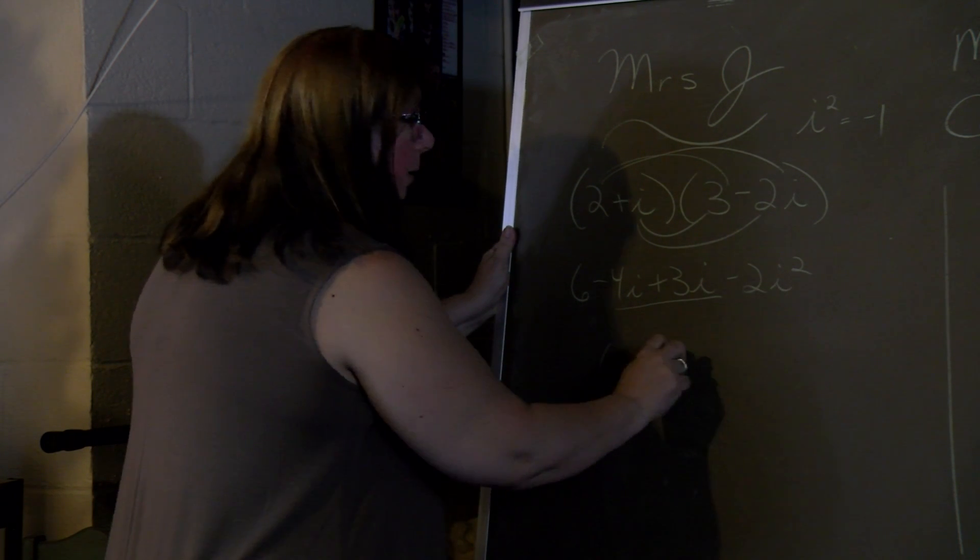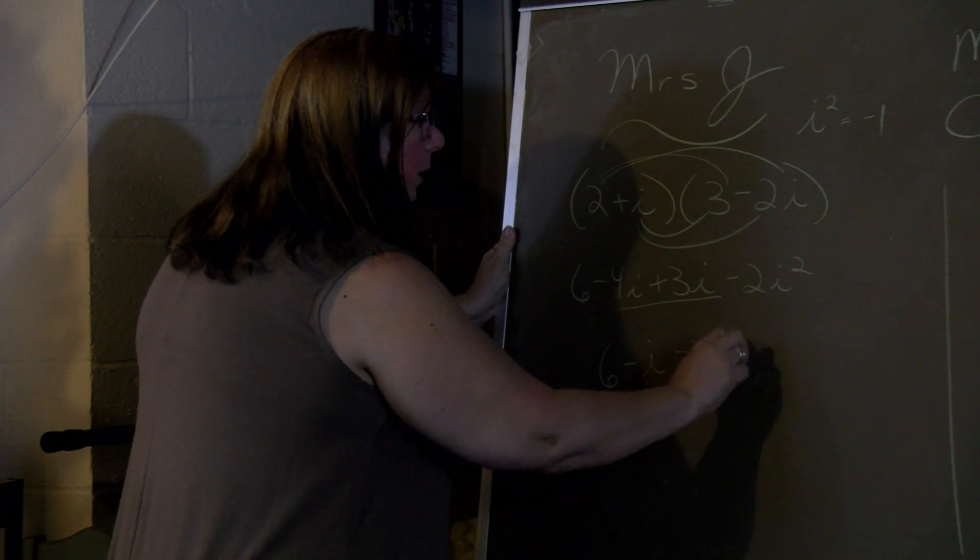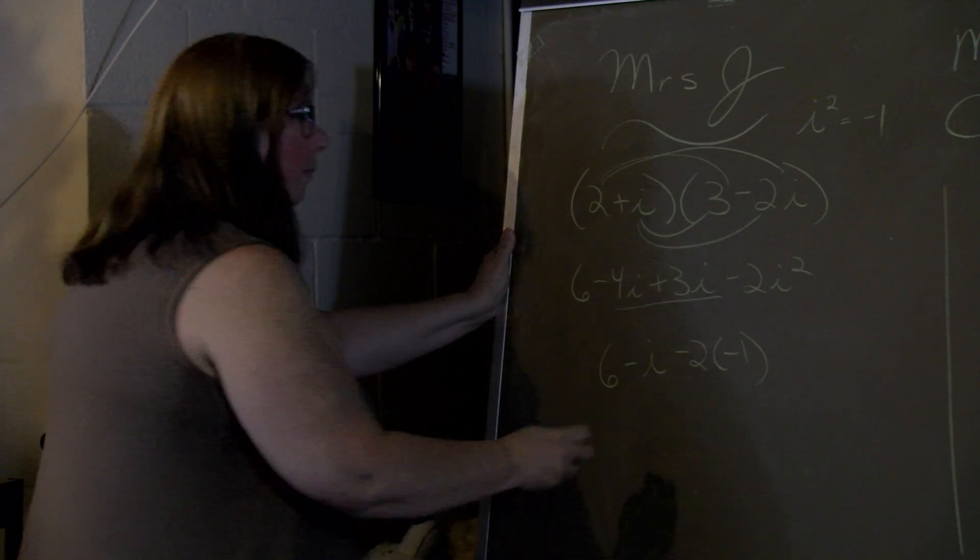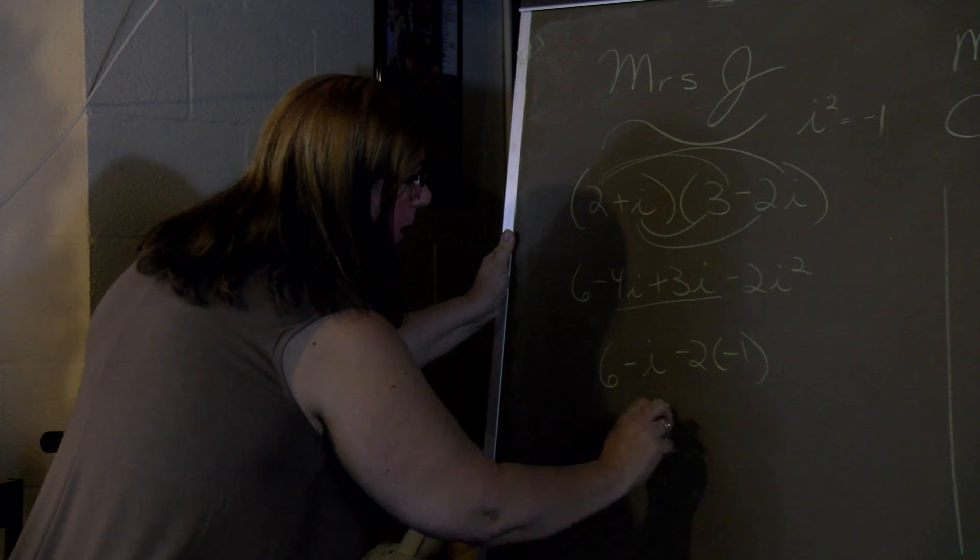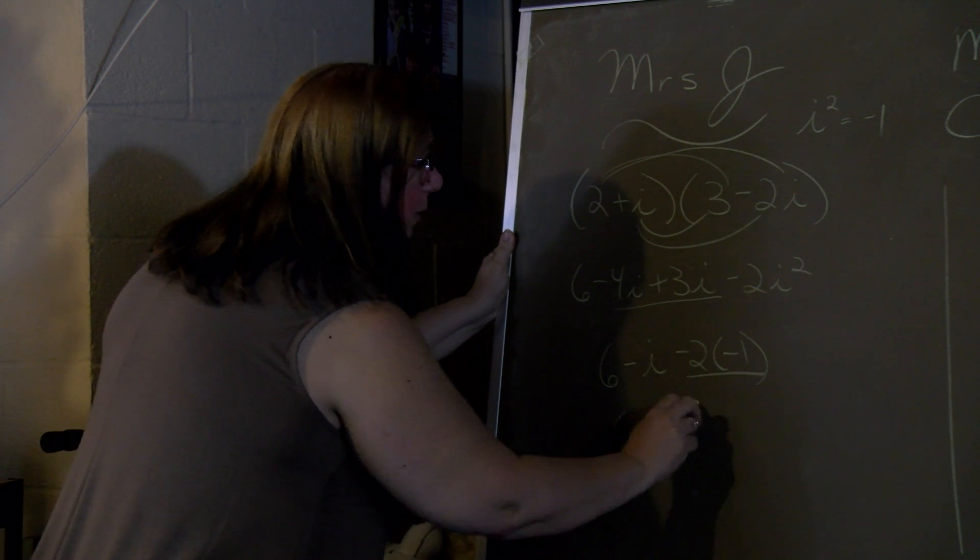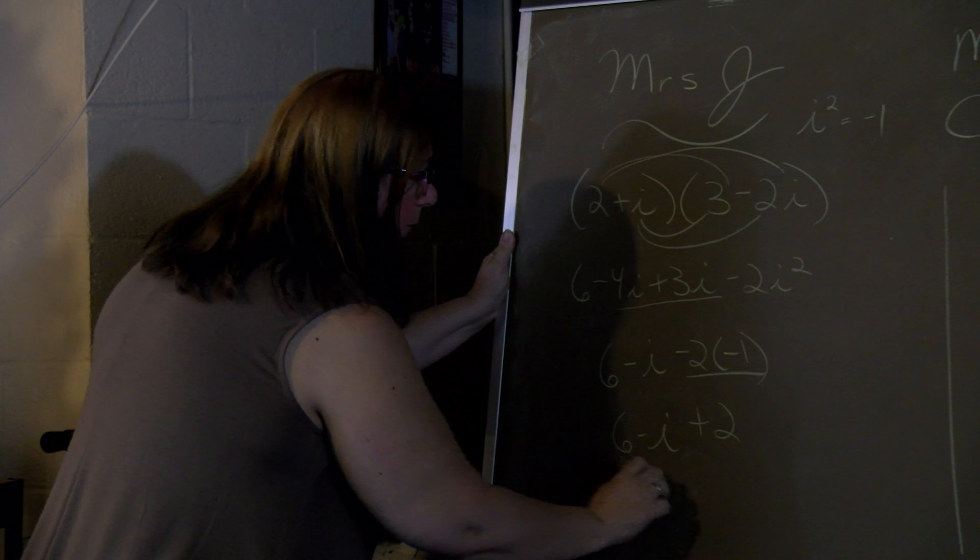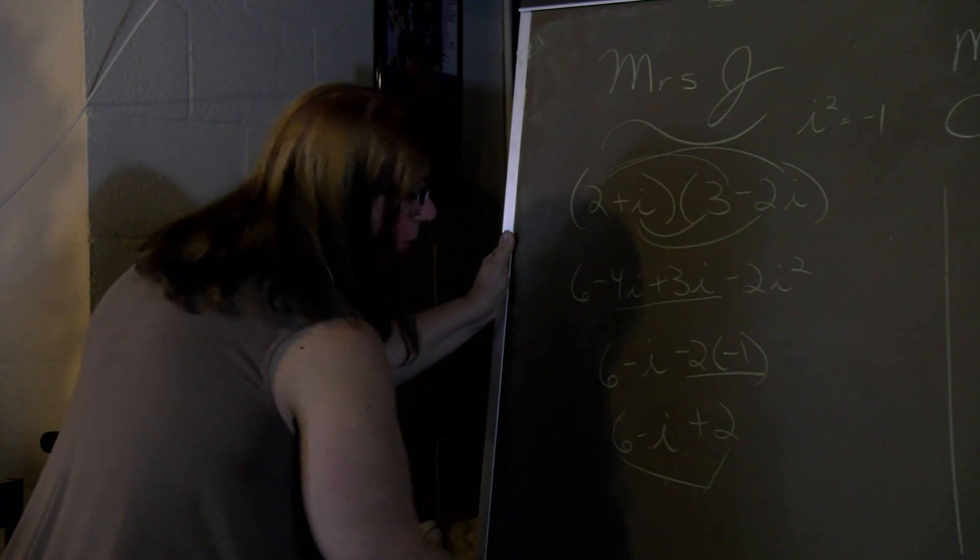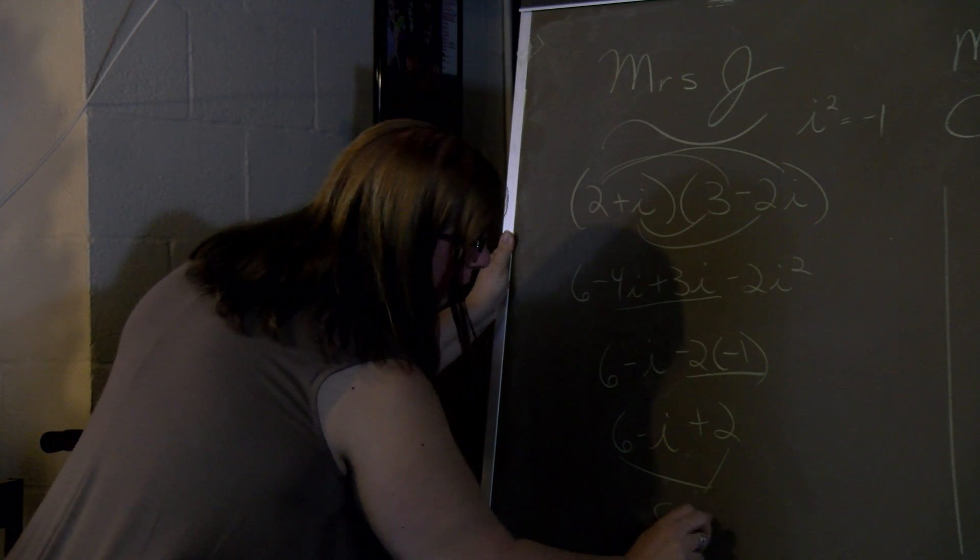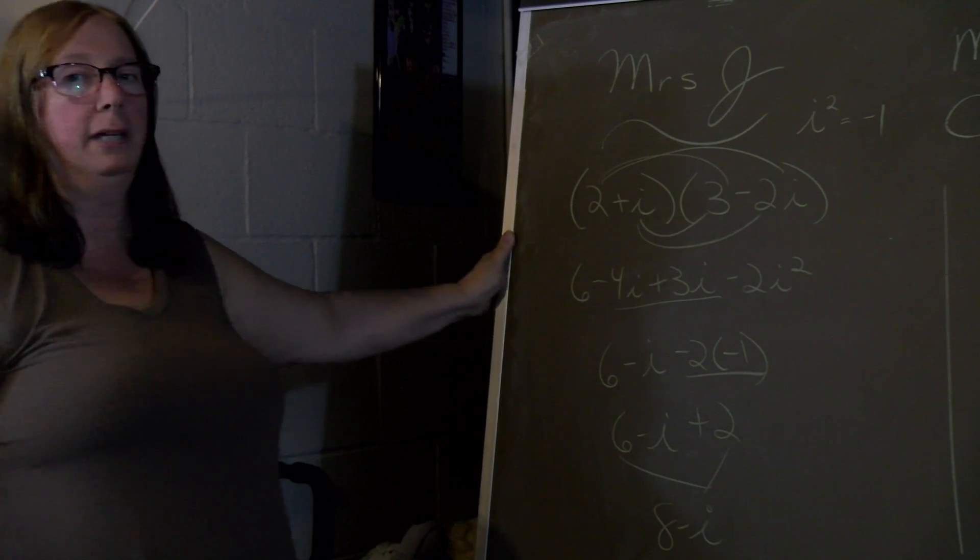But then this, remember i squared is a negative 1. So we have 6 minus i. This gives us plus 2. And then we combine the 6 and the 2. And get 8 minus i.